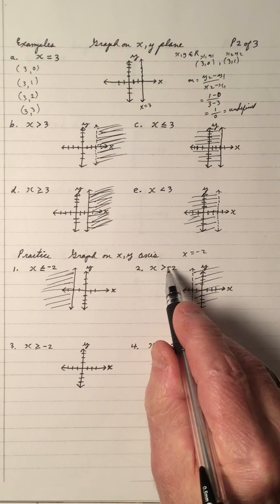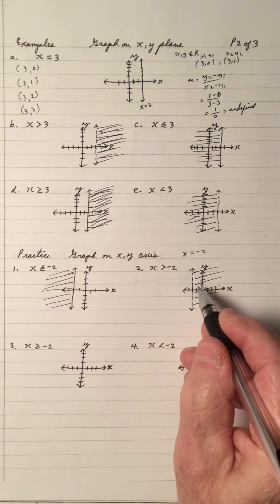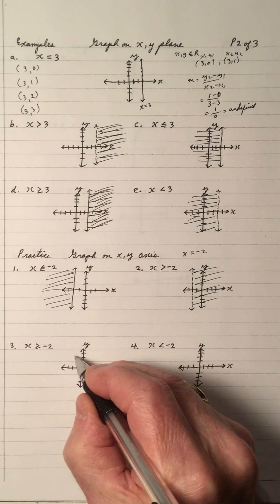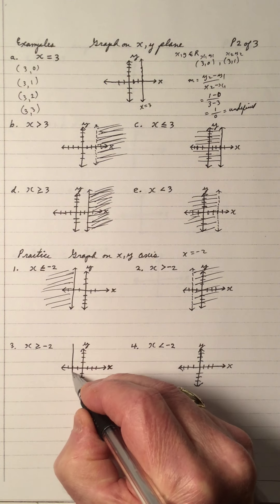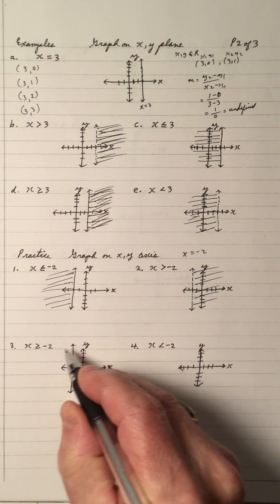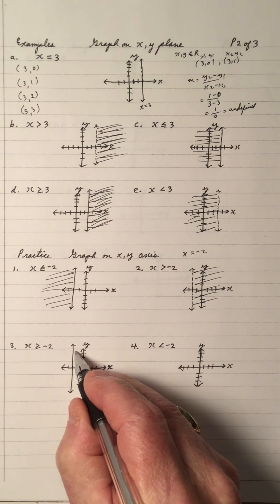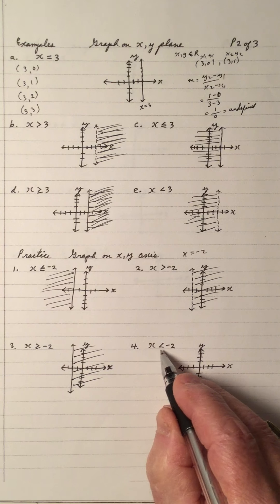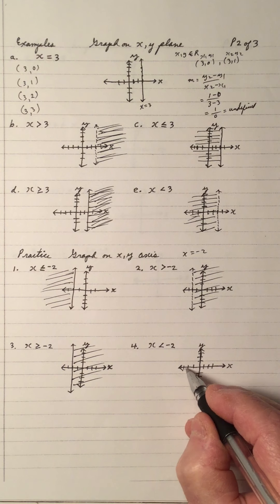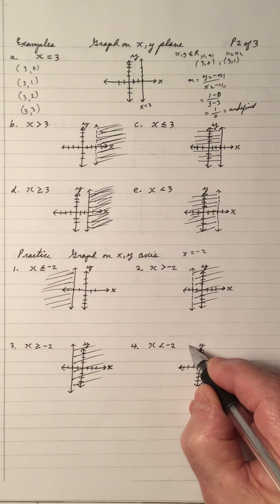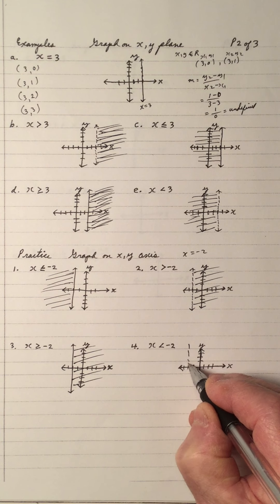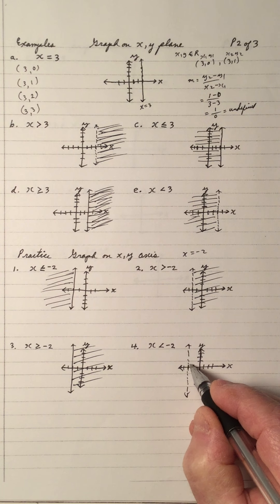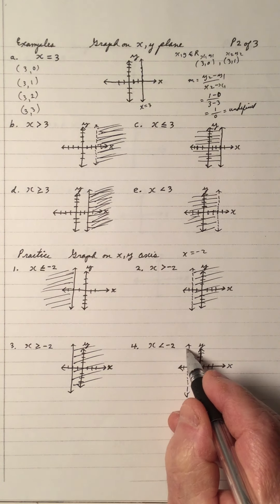x equals negative 2 is a vertical line passing through negative 2. x is greater than or equal to negative 2 — the equal sign means solid. All these points are included, and greater than is to the right. For x less than negative 2, the boundary line is negative 2 again, but the boundary line is broken and not included. Less than is on the left.